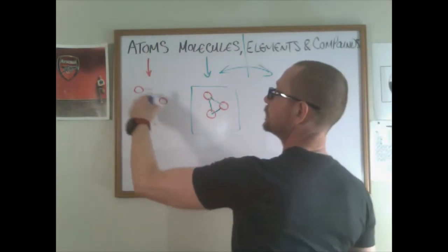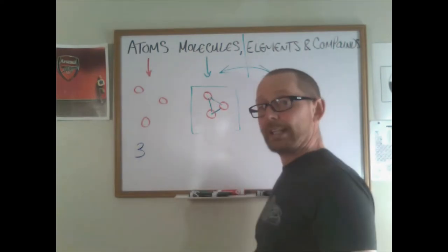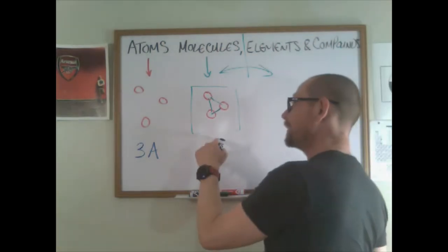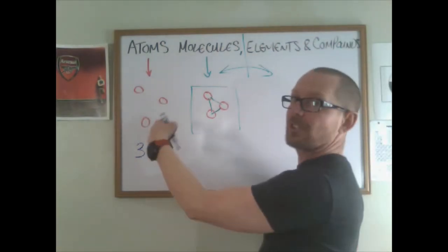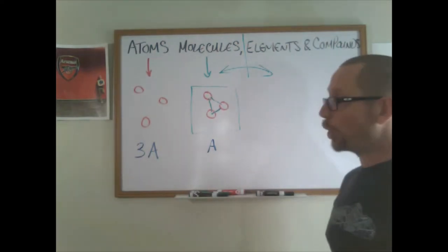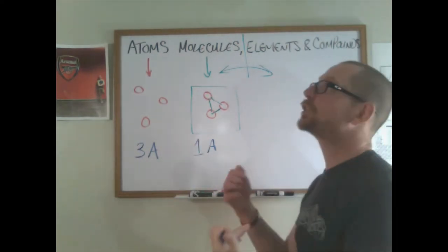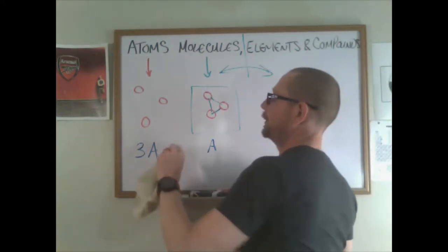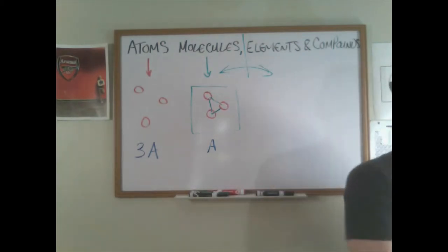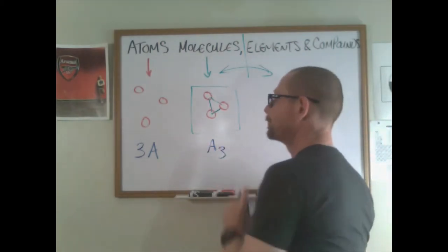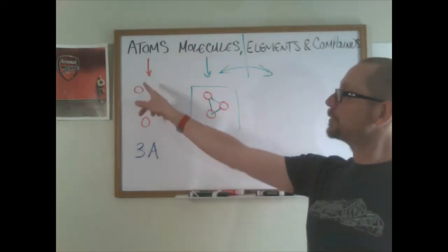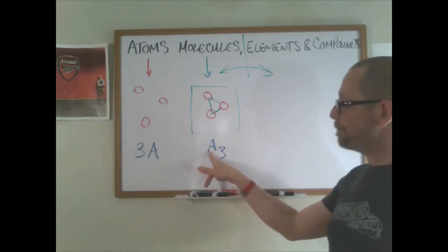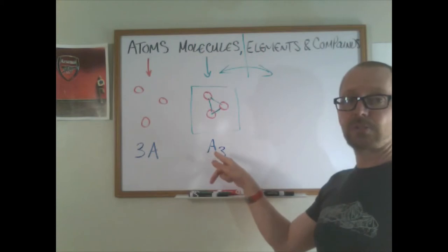In chemistry we'll symbolize this in the following way. Here I've got three A's. If we assume the same atoms A, I've got one thing. It's just like in algebra, we don't write the one, we just say the one is implied.